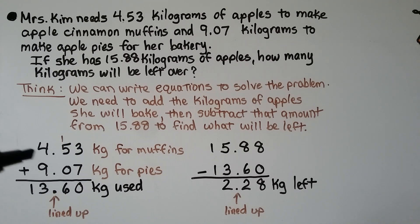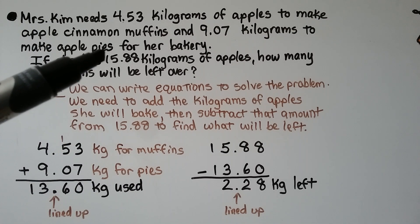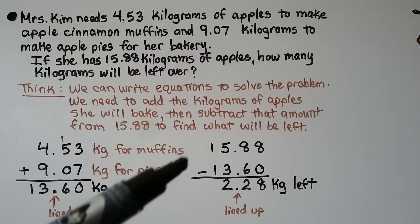We add the apples for the muffins to the apples she's going to use for the pies, and we get 13.60. That's how much she's going to use. We have our decimal points all lined up. Now, if that's how much she's going to use, and she had started with 15.88, we can subtract.